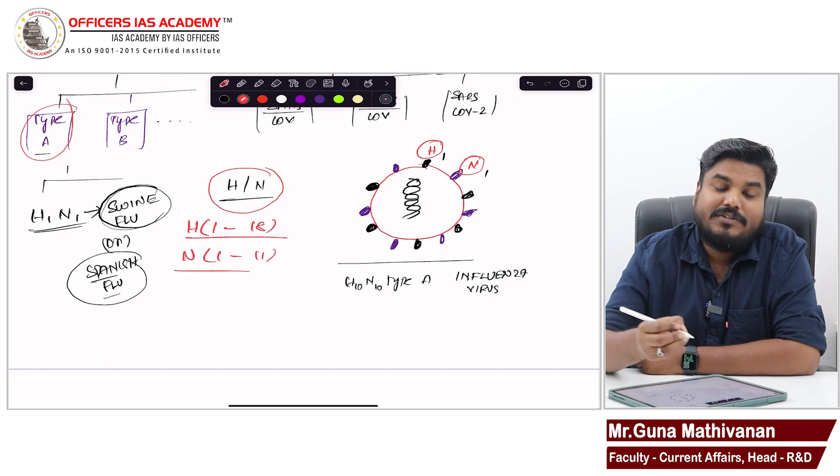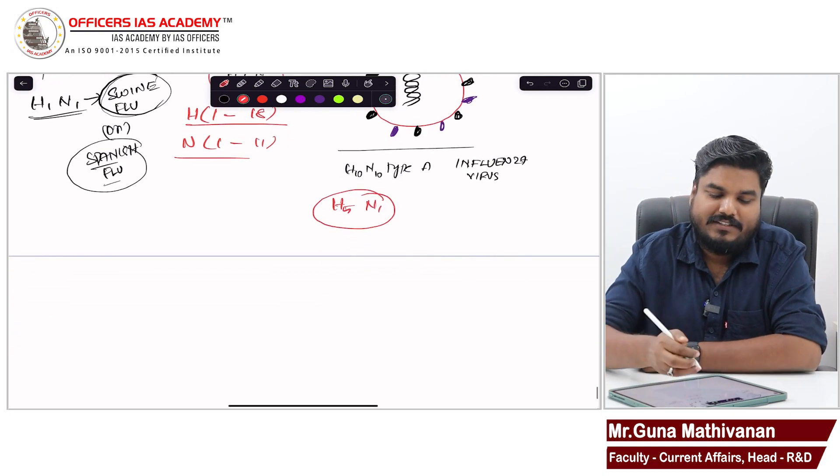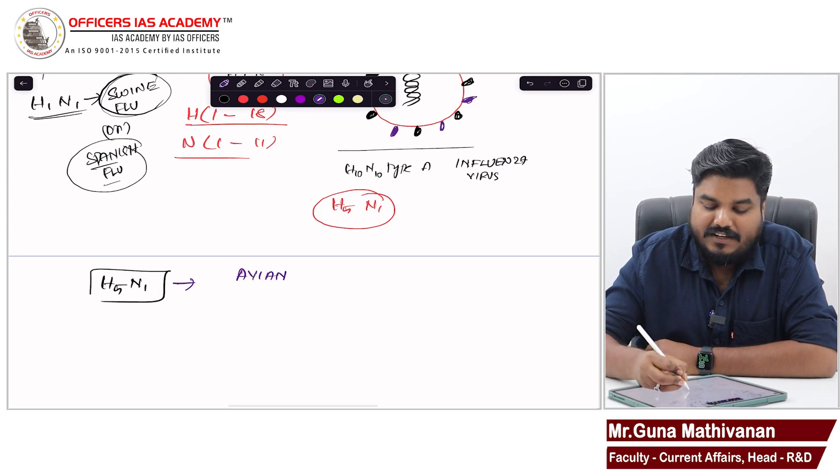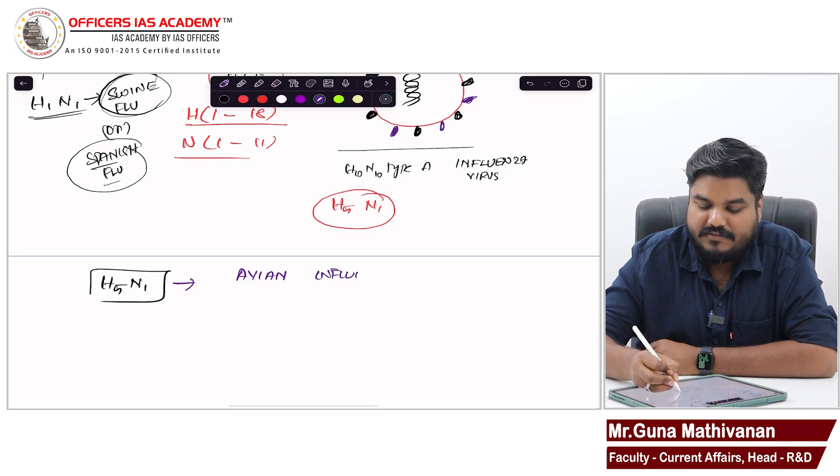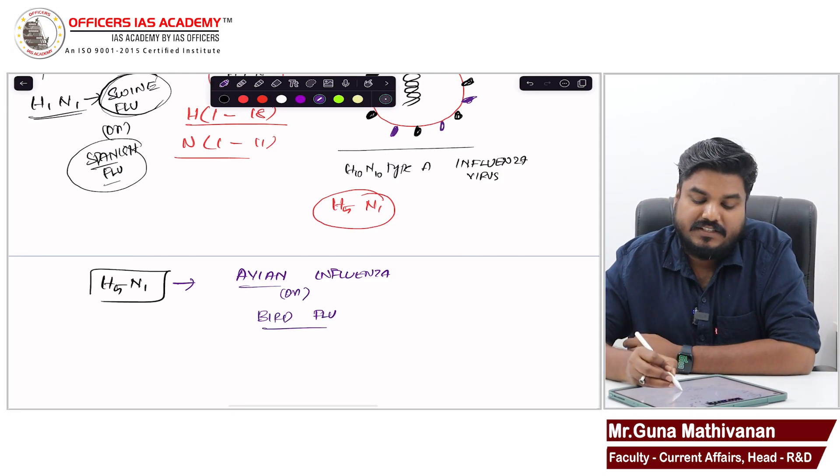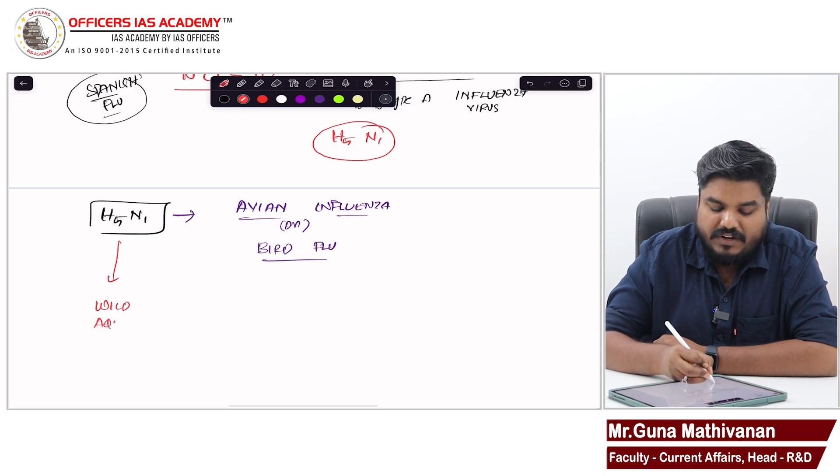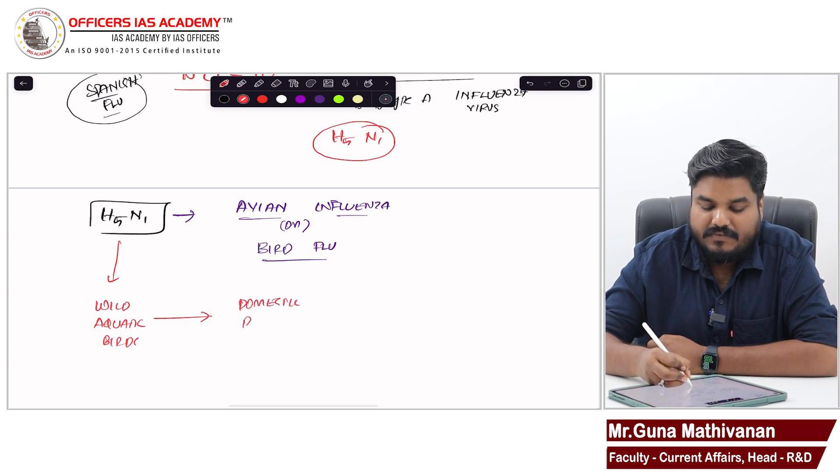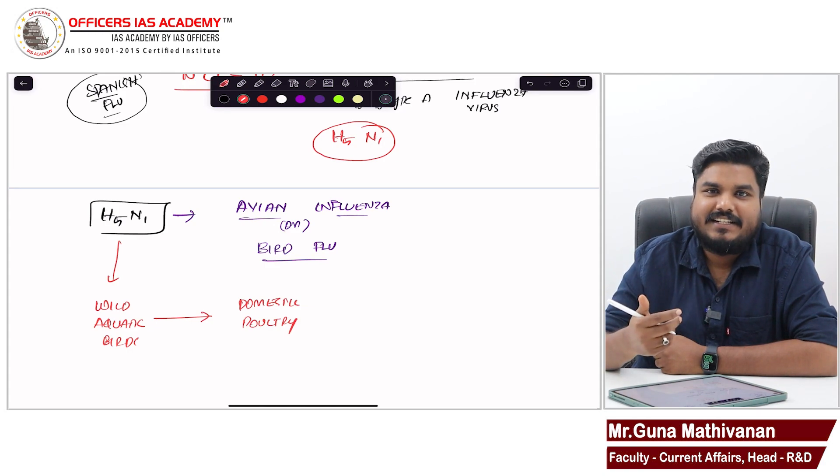Now, we are more interested to know about another type of virus called H5N1. This H5N1 virus is referred to as avian influenza or bird flu. This H5N1 virus from wild birds, particularly wild aquatic birds, will infect domestic poultry like chicken and duck.